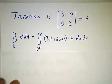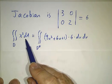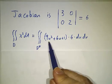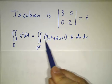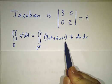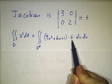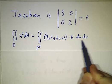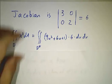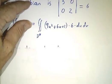So our change of variable formula says that the integral of x squared dA over the original region is you rewrite x squared in terms of the u and v variables, you multiply by the Jacobian, which is 6, and you integrate that dU dV. Okay, and we're going to do that one term at a time.